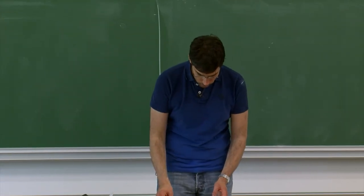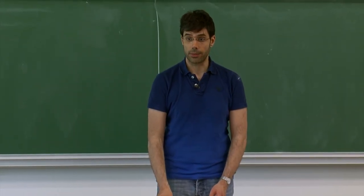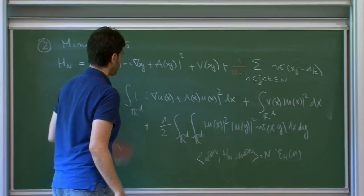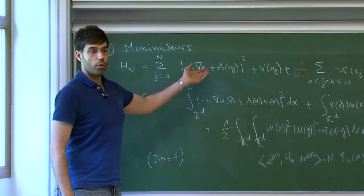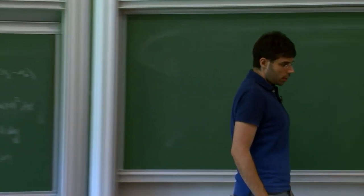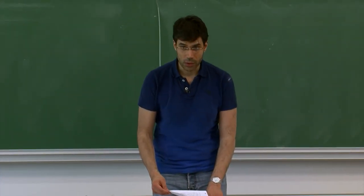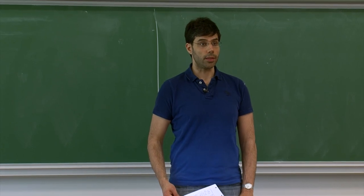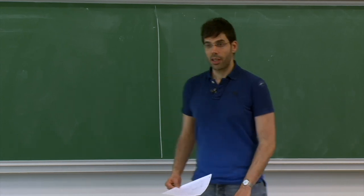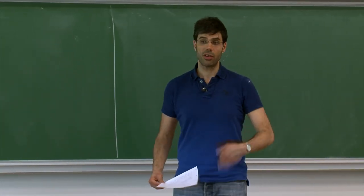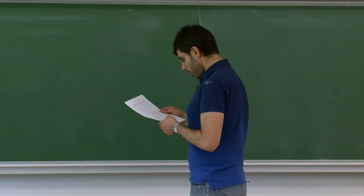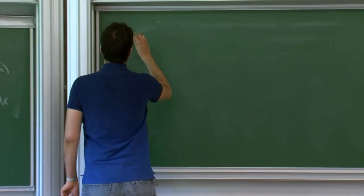What we really want is to relate the minimizers. That is, take a sequence ψ_N in the symmetric N-body space, normalized, that is a quasi-minimizer of the first problem, and ask whether it converges in some sense to the minimizers of the second problem. Since ψ_N is not exactly u^{⊗N} — one can even prove this is always false as soon as W ≠ 0 — the convergence must be weaker and will come from looking at the marginals.